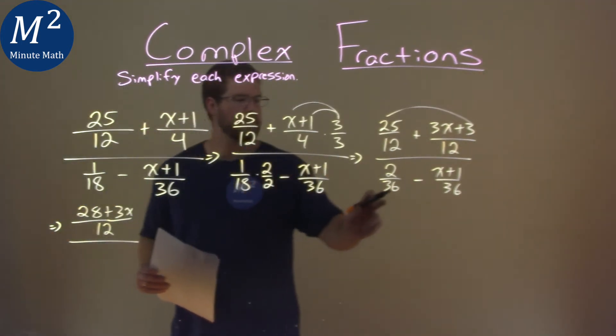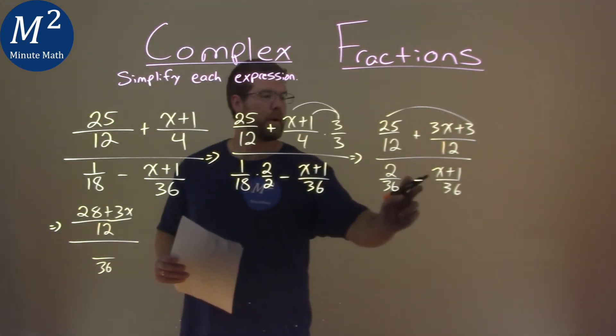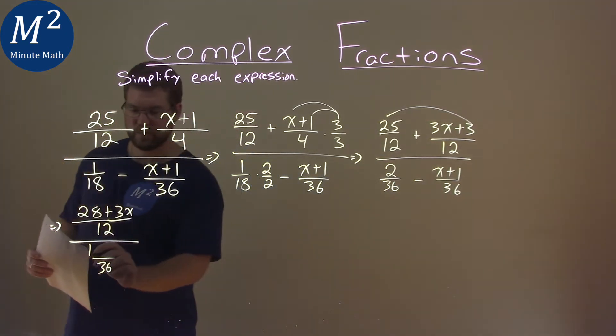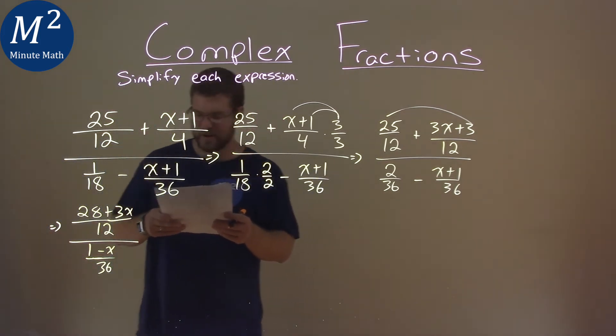Over here, denominator is still 36. But then 2 minus 1 is 1, and then we have minus an x. So we have 1 minus x right there. Just making sure I'm still lined up, and we are.